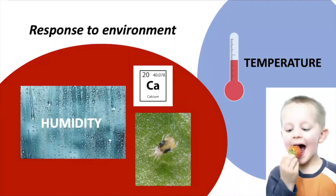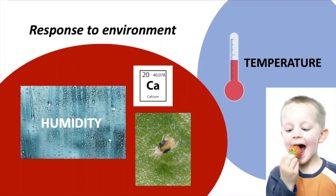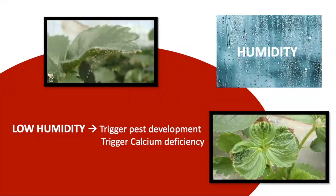So let's start with the environment, including temperature and humidity. A strawberry crop is very sensitive to different variables, even including light, but let's focus for now on temperature and humidity. Speaking about humidity, this variable is related to pest incidence and also nutrient uptake. Low humidity levels can trigger pest incidence, including the strawberry's most common nightmare: spider mites.